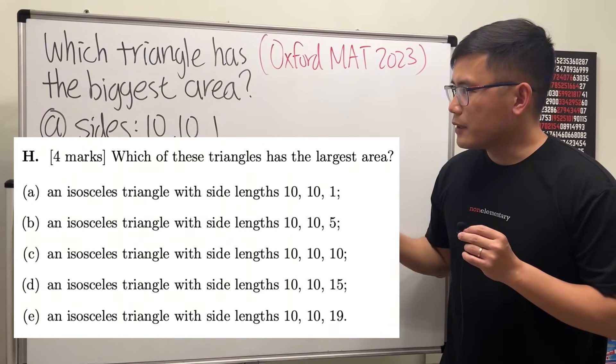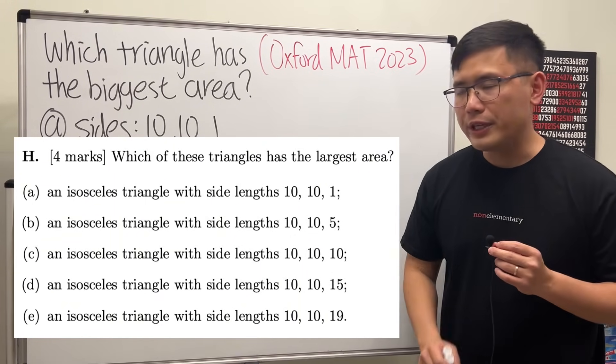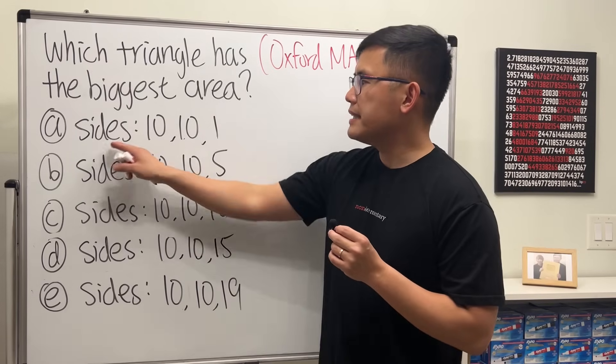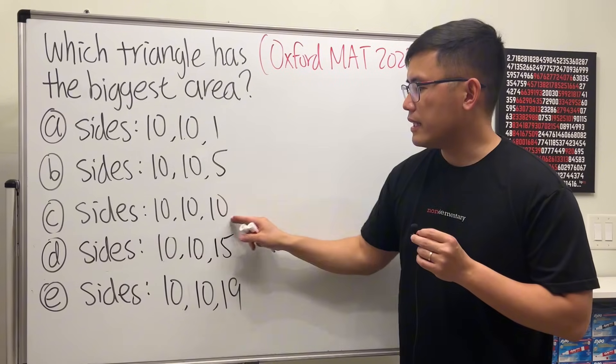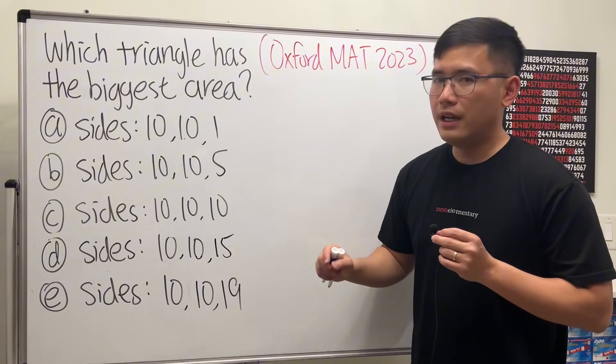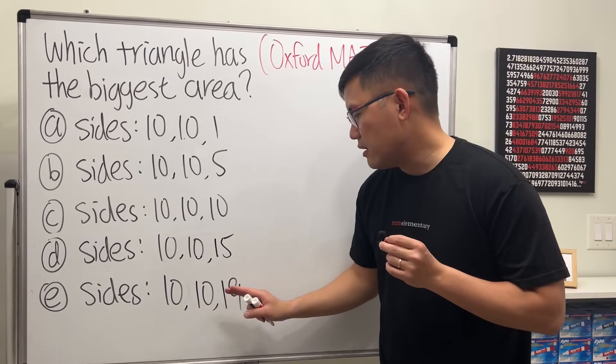Which of the following triangle has the biggest area? We have a triangle with sides 10, 10, 1, or 10, 10, 5, or 10, 10, 10, or 10, 10, 15, and lastly 10, 10, 19.